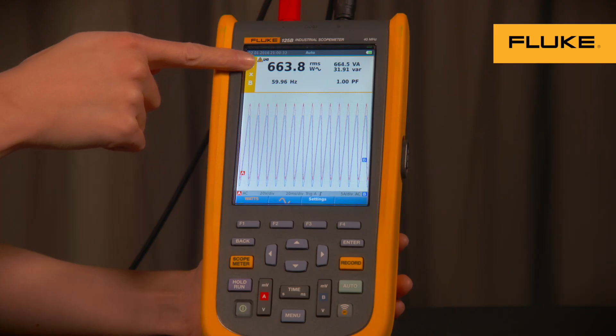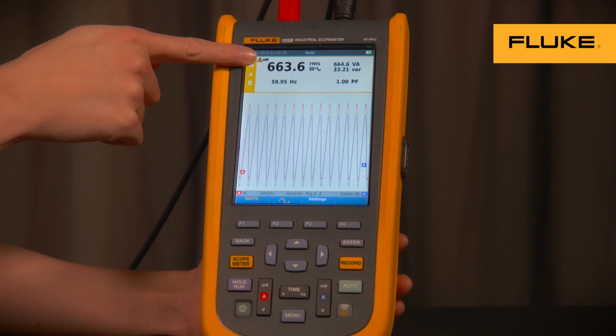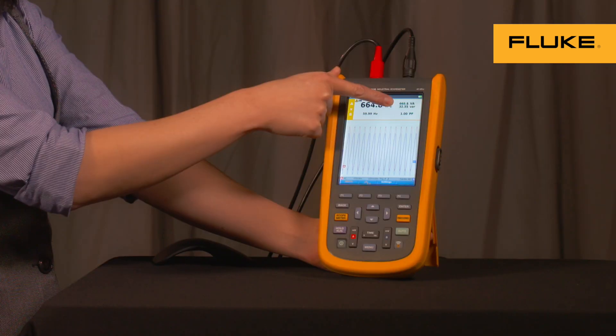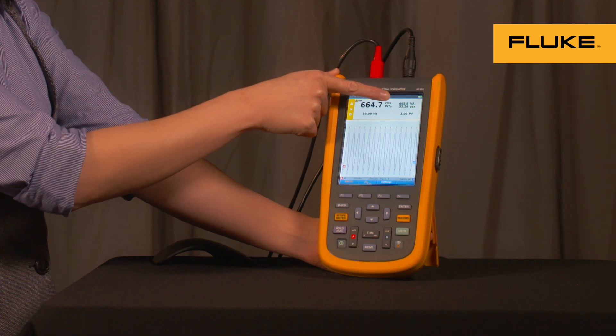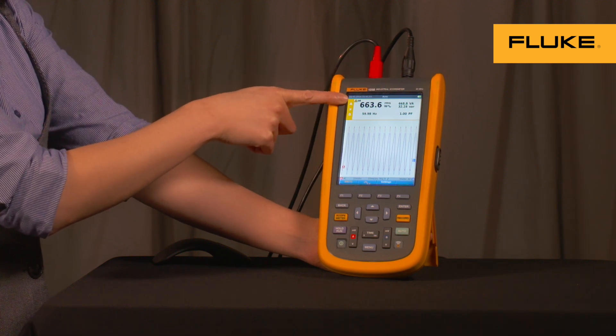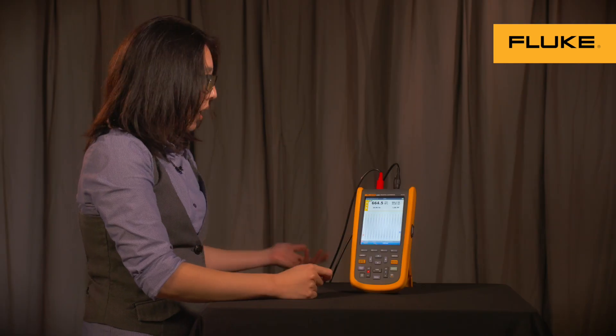Here you can see your power factor, your reactive power in bars, volt amps reactive, your apparent power, which is in volt amps, and your real power, watts, as well as frequency.